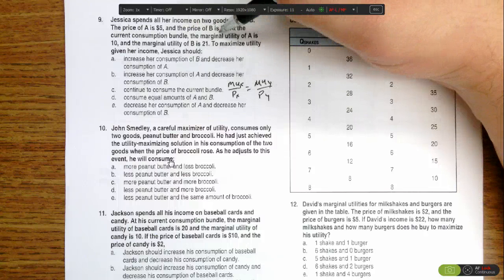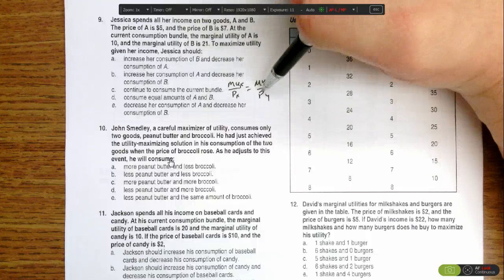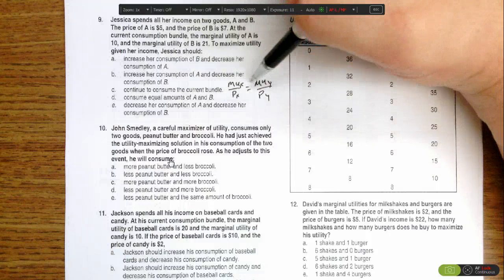When she does that, if she buys more B, the marginal utility will continue to shrink, which would drop this ratio. Because she's buying less A, the marginal utility should increase, which would increase this ratio until they begin to normalize.